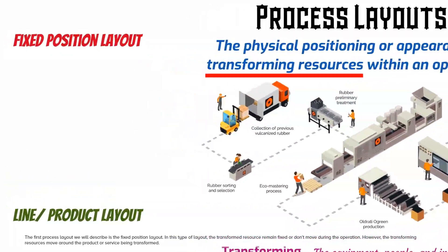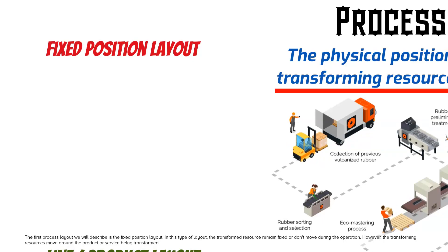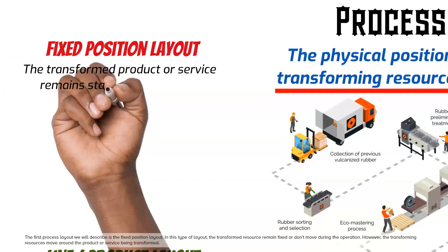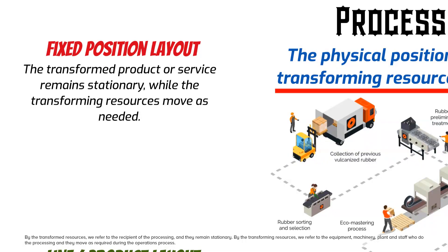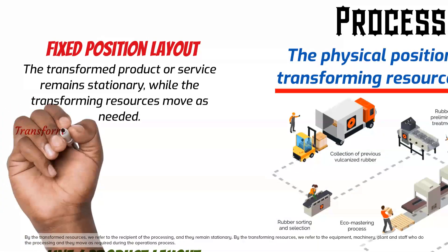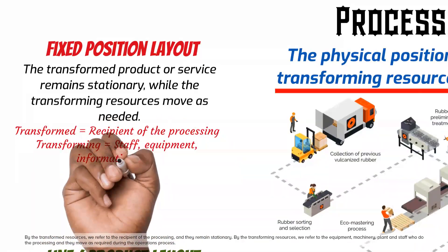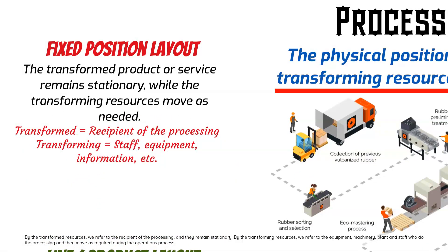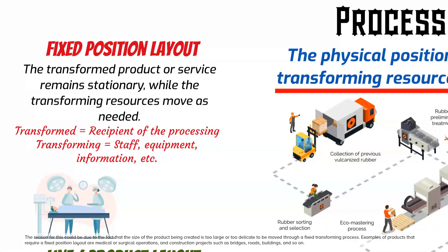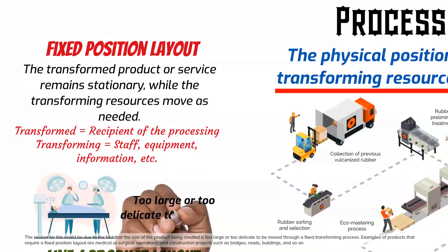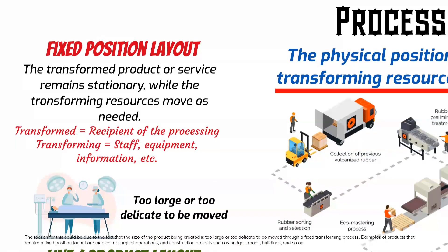The first process layout we will describe is the fixed position layout. In this type of layout, the transformed resource remains fixed or doesn't move during the operation. However, the transforming resources move around the product or service being transformed. The transforming resources — equipment, machinery, plant, and staff — do the processing and move as required during the operations process. This could be due to the fact that the size of the product being created is too large or too delicate to be moved through a fixed transforming process.